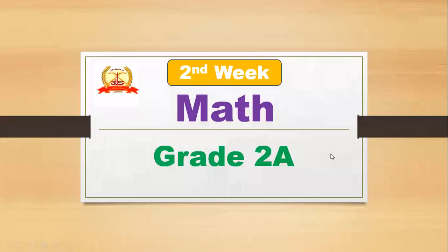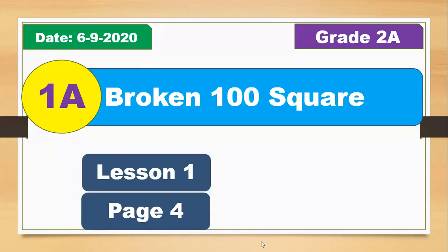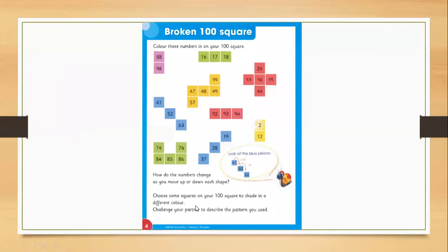Hi everyone, welcome to math class. This is our second week. Here is the book for math — the math learner book. You must have a pencil and a notebook and follow the lesson. We start from Unit 1a. This is Unit 1a and here is the topic: Broken 100 Square. This is page number four — as you can see, this page is Broken 100 Square, and here are a lot of numbers.